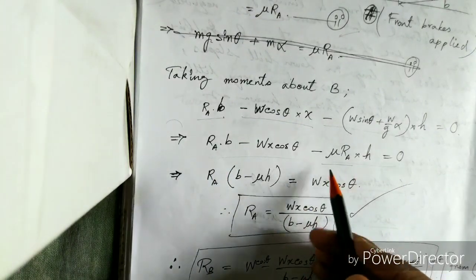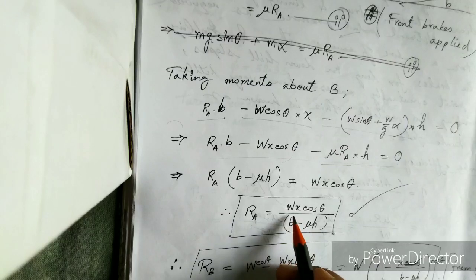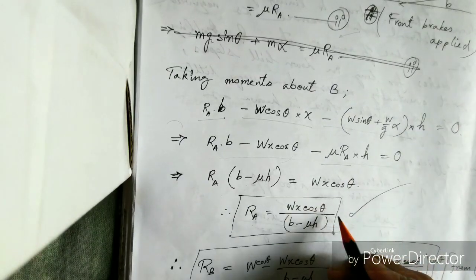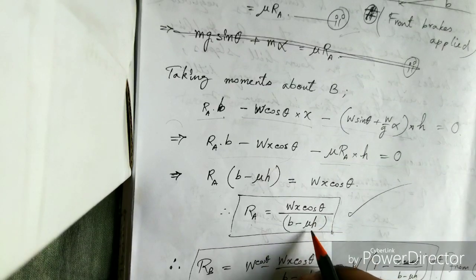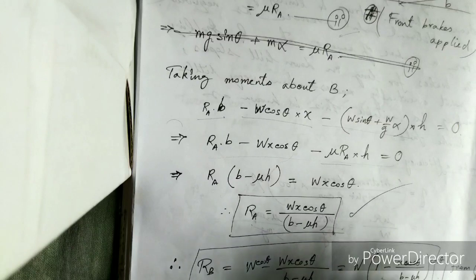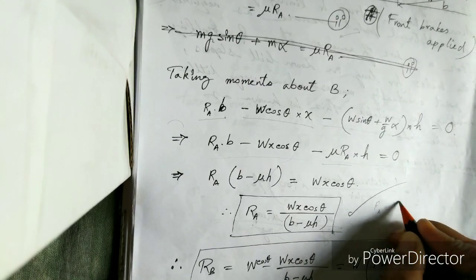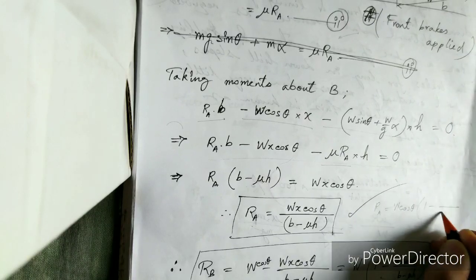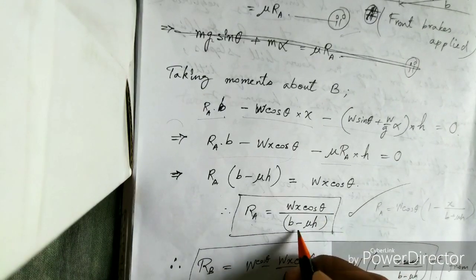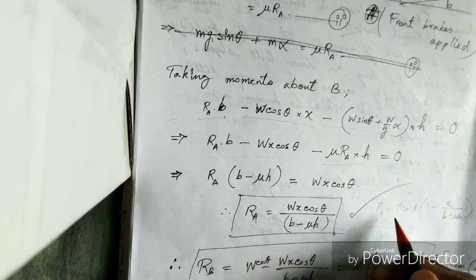Taking RA common and moving terms to the right-hand side, we get RA equals W x cos theta divided by (B minus mu H). That's how we get our front wheel reaction force. There is a similarity with the rear wheel brake case — when rear wheel brakes are applied, RA was W cos theta into (1 minus B plus mu H into X). Here the denominator is getting smaller, whereas there it is bigger, so the front wheel has to take much more force compared to the rear wheels.